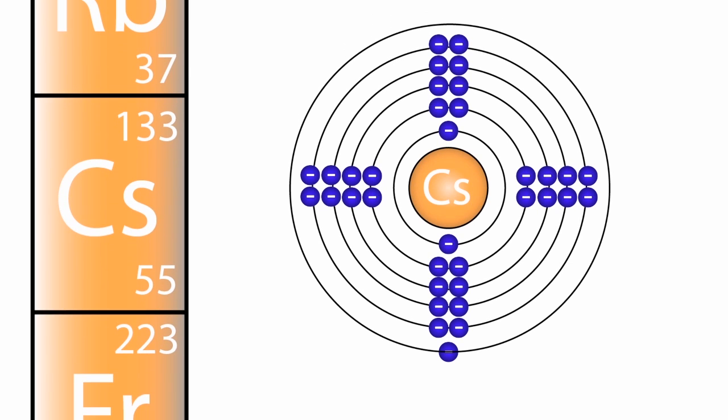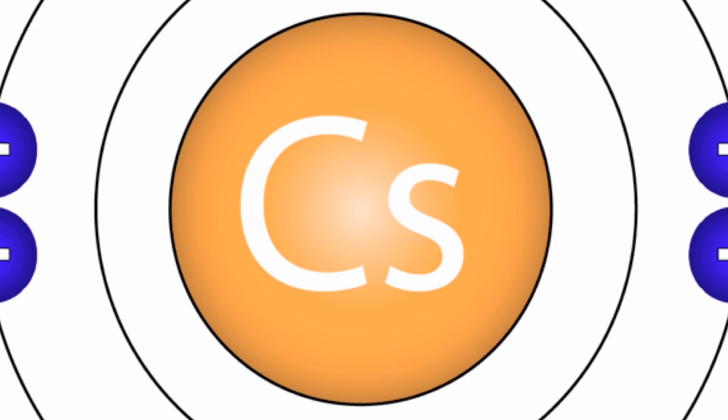This is why caesium is the most reactive metal we know. The reason for this is the outer electron is a long way away from the nucleus and therefore is easily picked off.